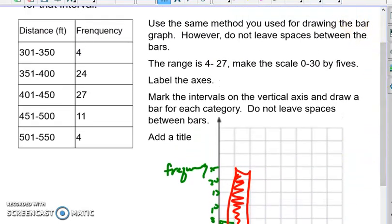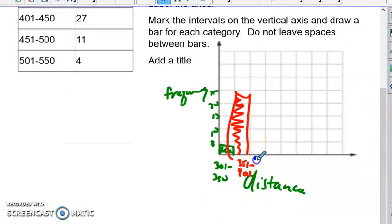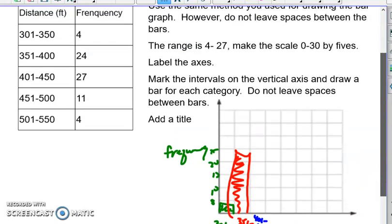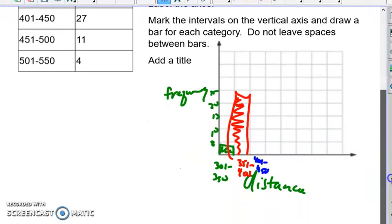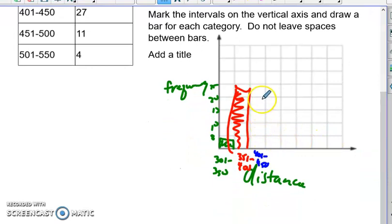Let's do one more just to see. The next one is 401 to 450. So our next category, 401 to 450. And the frequency of that one would be 27, 5, 10, 15, 20, 25. So about here. And you can see how that's going to look.